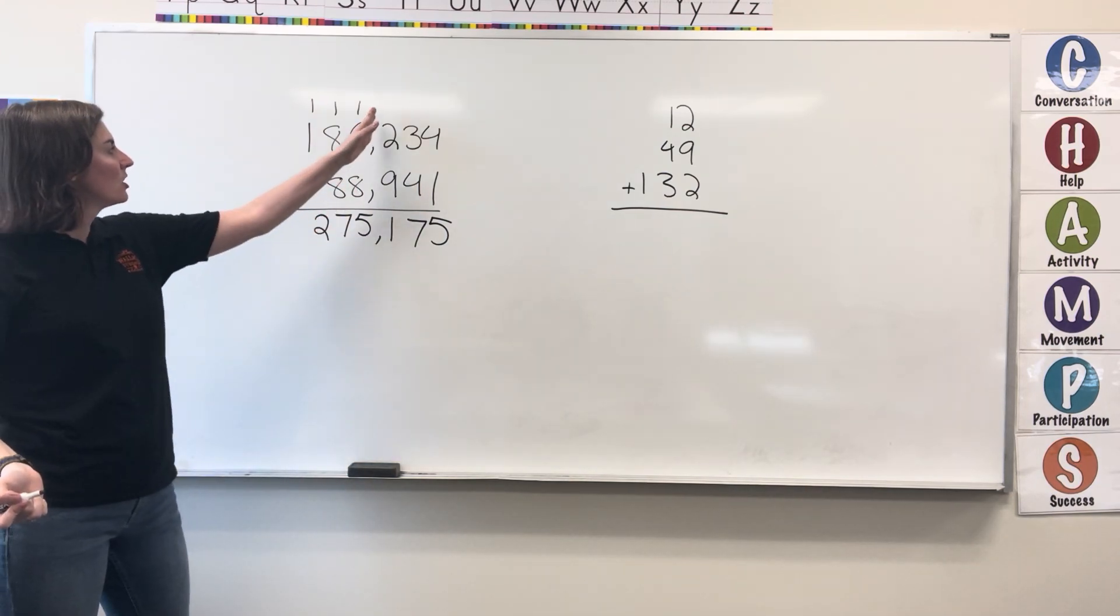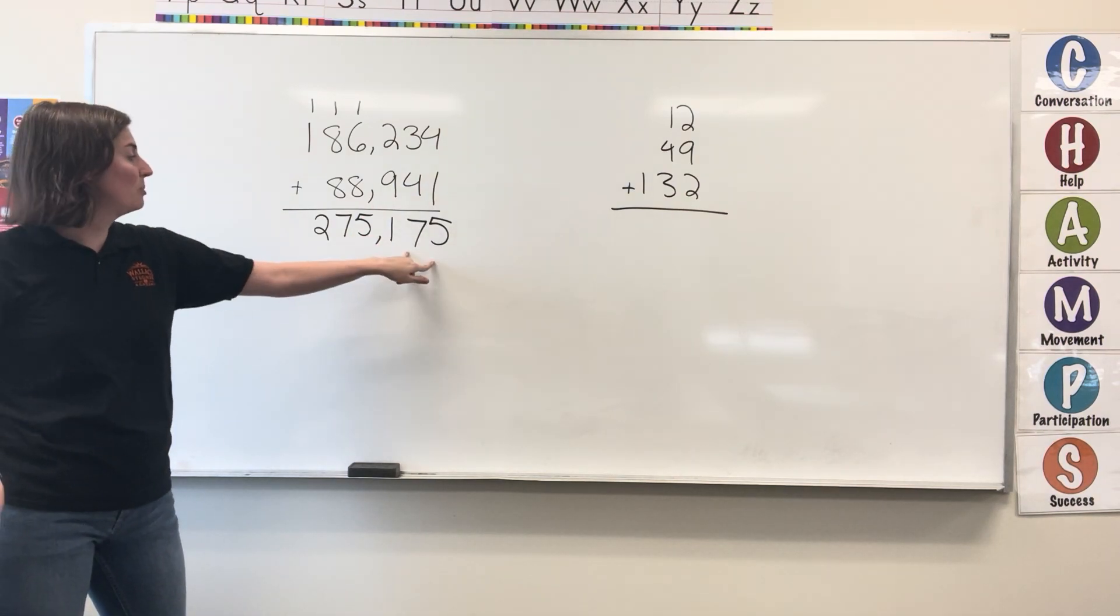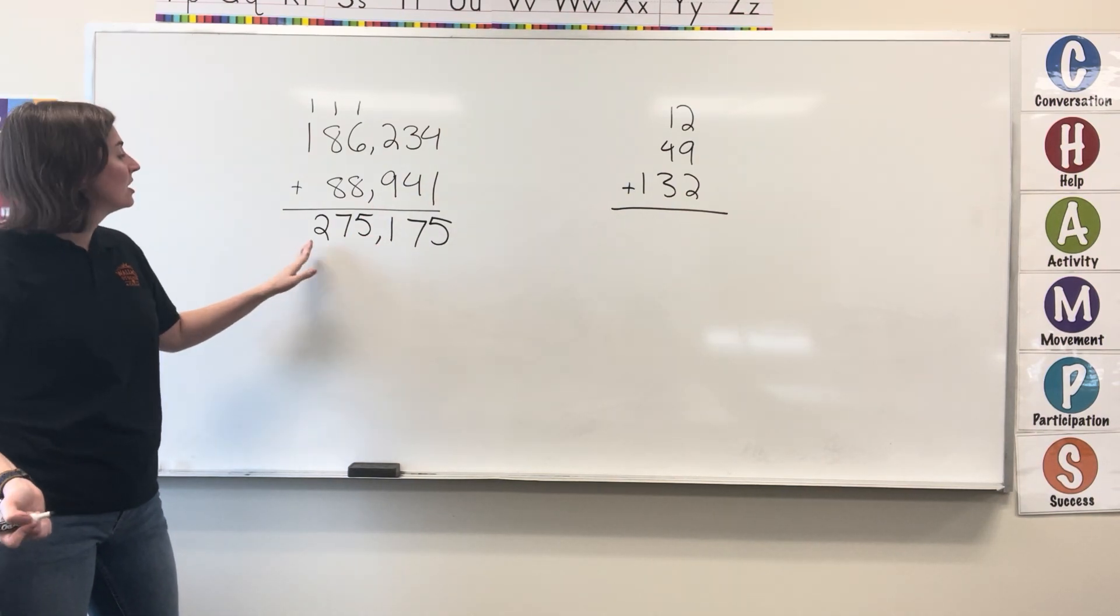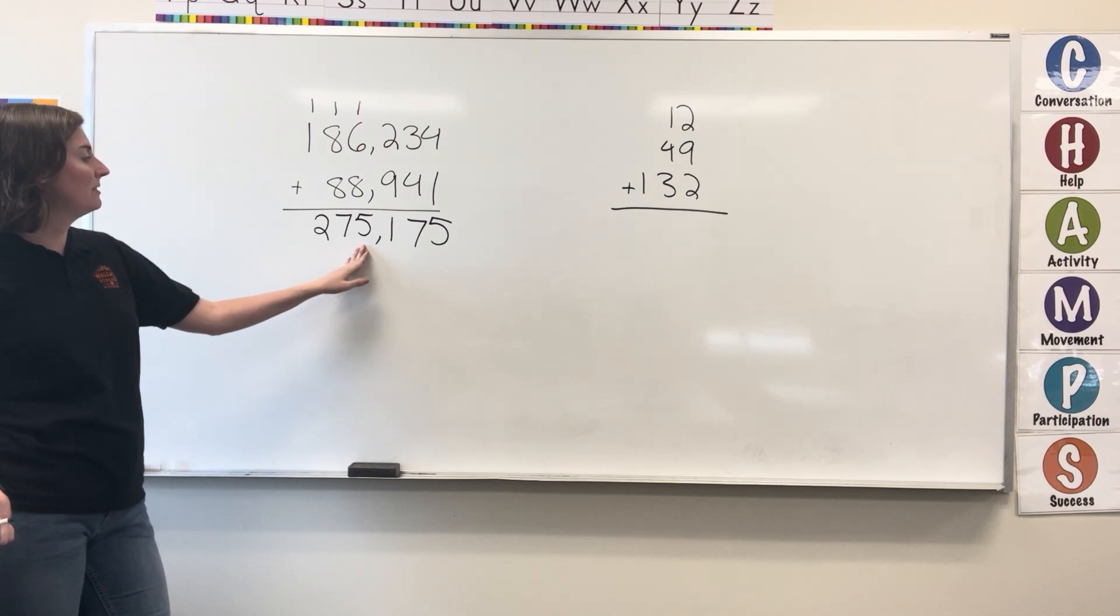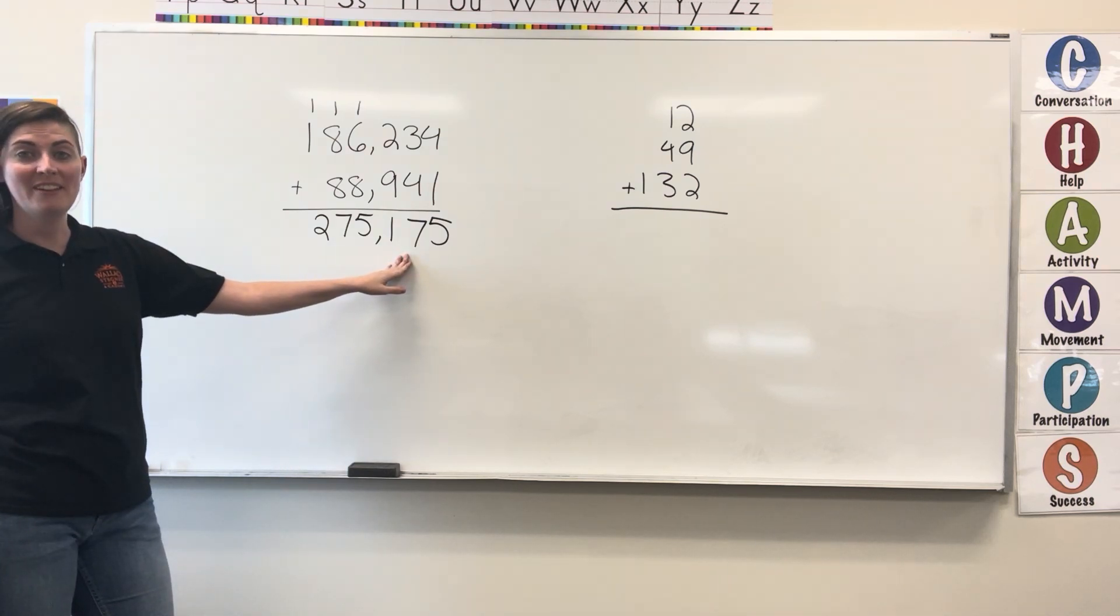Your comma is going to come straight down, you're always grouping those three sets of numbers. Our answer is 275,175.